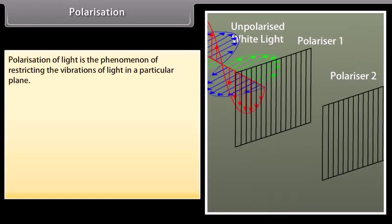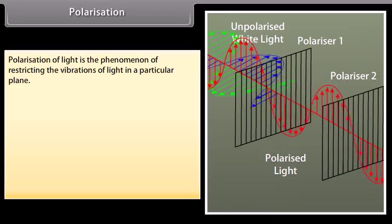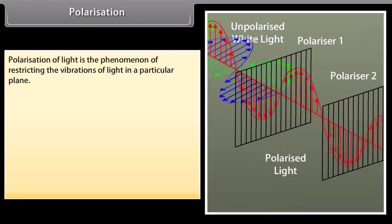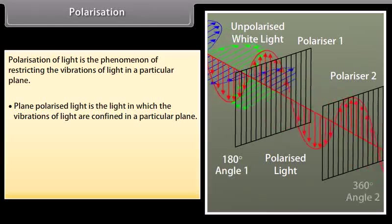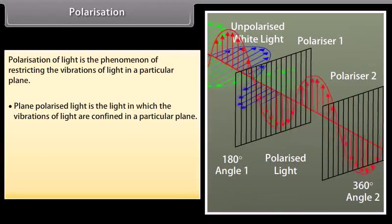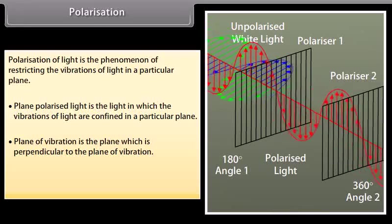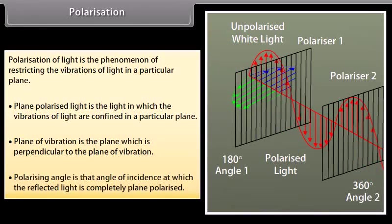Polarization of light is the phenomenon of restricting the vibrations of light in a particular plane. Plane polarized light is the light in which the vibrations are confined in a particular plane. The plane of vibration is perpendicular to the plane of polarization. The polarizing angle is that angle of incidence at which the reflected light is completely plane polarized.